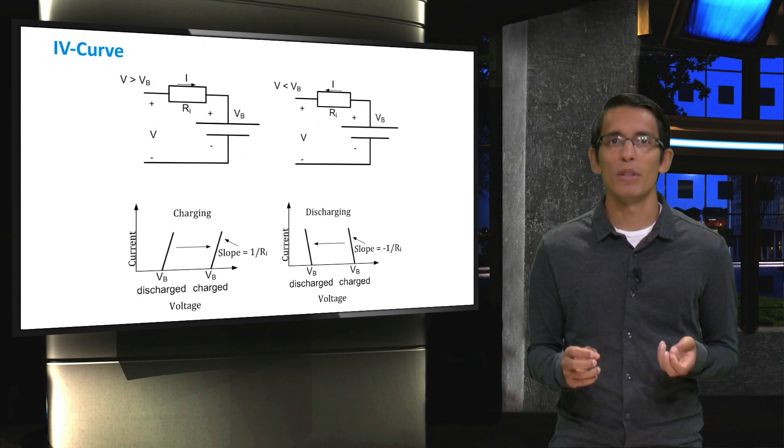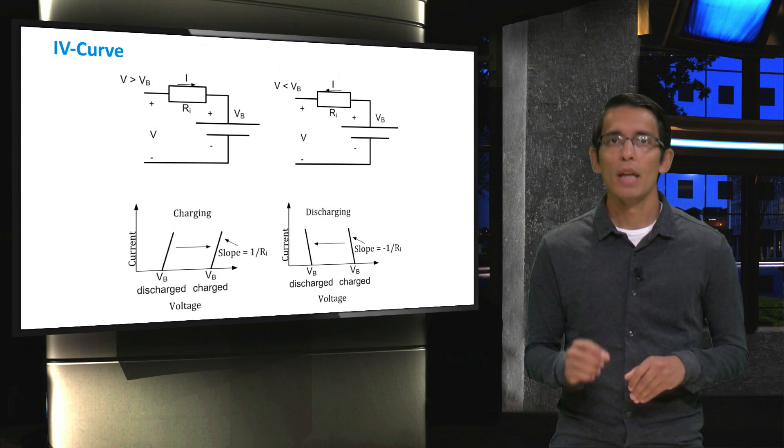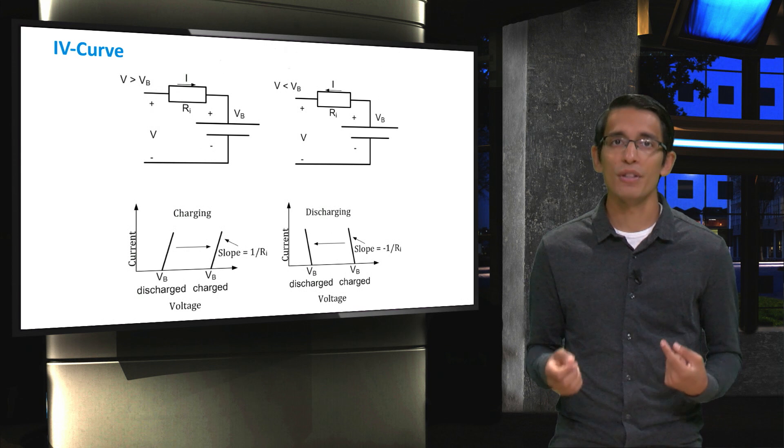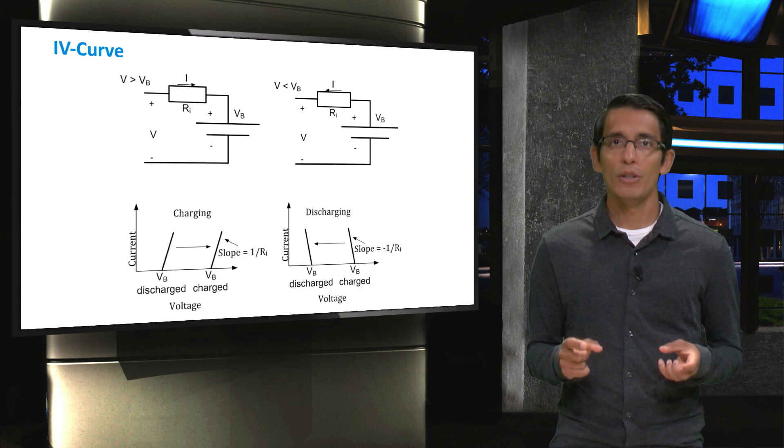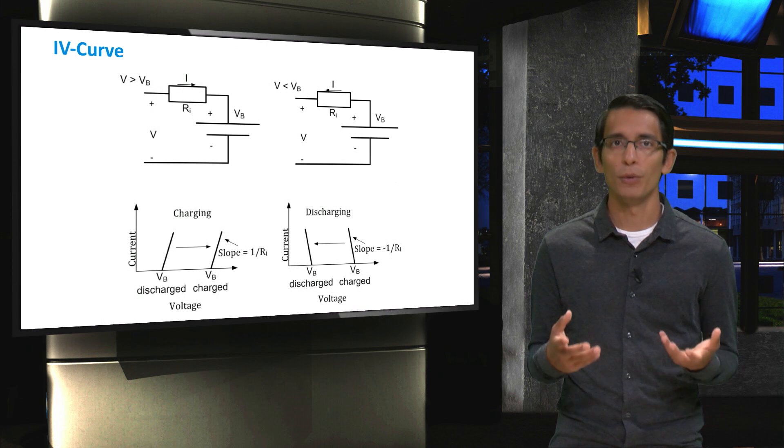But things start to look a bit different when the battery is discharging. There is a voltage drop across the resistor but in the other direction since current is flowing in the opposite direction. Therefore, if you were to measure the voltage of a battery during discharge, the measured voltage V would be less than Vb, or the open circuit voltage of the battery.